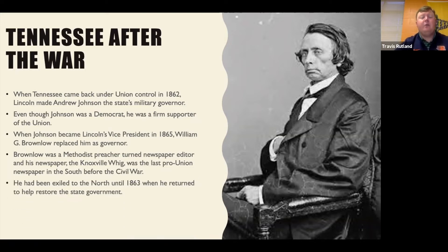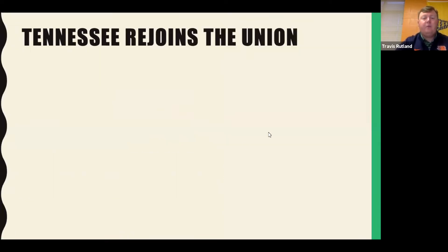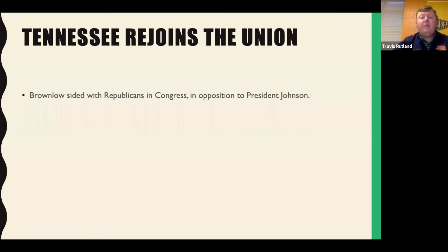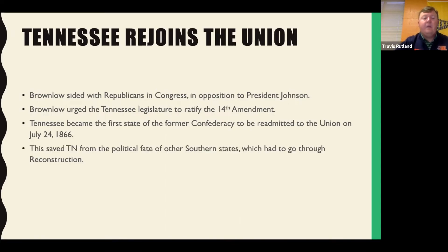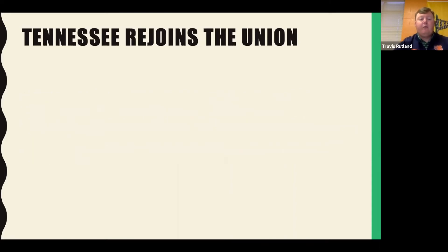Brownlow had even been exiled to the North until 1863, when he returned to help restore the state government. He sided with Republicans in Congress in opposition to President Johnson, and urged the Tennessee legislature to ratify the 14th Amendment. Tennessee became the first state of the former Confederacy to be readmitted to the Union on July 24th, 1866. This saved Tennessee from the political fate of other southern states, which had to go through the five military districts that Congress put the South in.